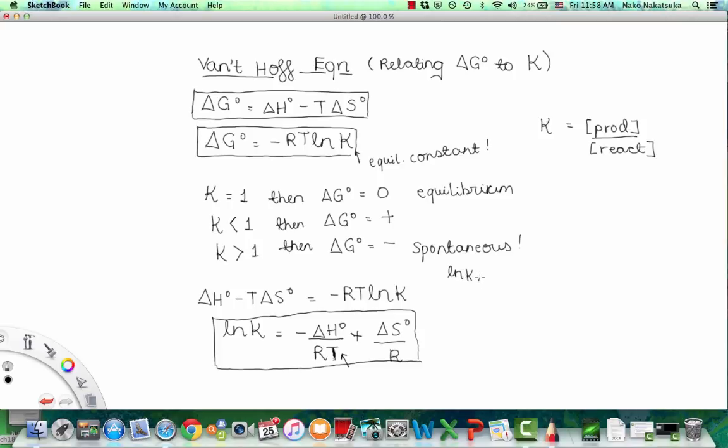So let me show you that right here, where if we have lnK1 = -ΔH/RT1 + ΔS/R. And then let's say there's another value, lnK2 = -ΔH/RT2 + ΔS/R. Now, since this is a natural log, we can rewrite this as ln(K2/K1) = -ΔH/RT2 + ΔH/RT1.